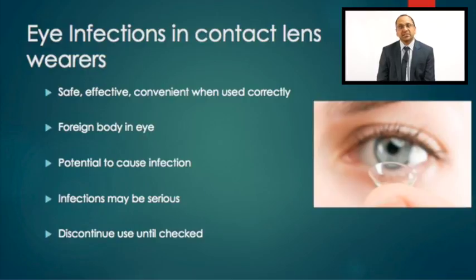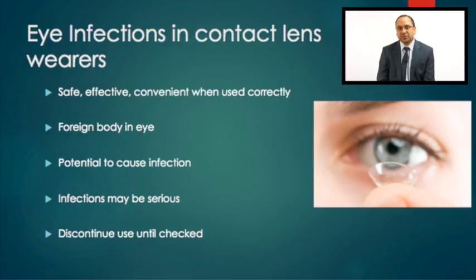The contact lenses sit on the part of the eye called the cornea and infections can develop there. The main thing to know is: if you develop redness of the eye, soreness, a discharge, altered vision, or other symptoms that could suggest an infection, it is important to discontinue contact lens usage until the problem has resolved or been checked and the infection ruled out.